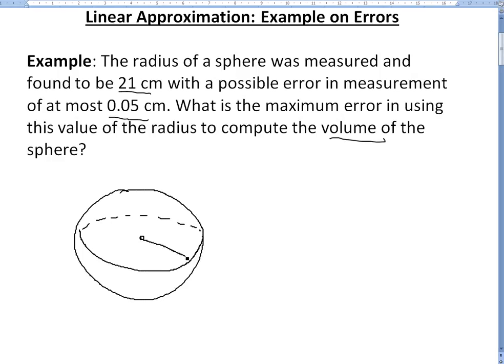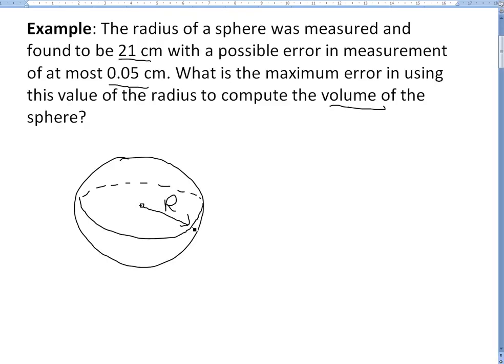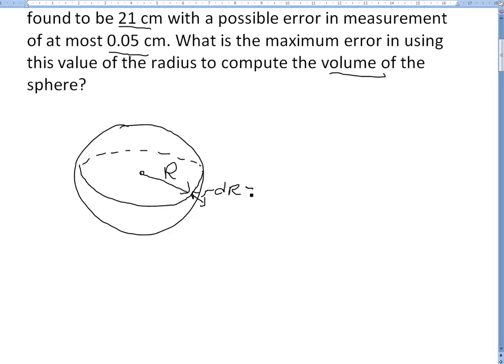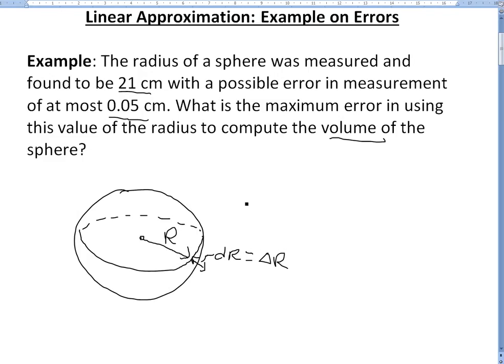So we have the radius here, we'll call this R. Basically we have R here, then we have this error here in the radius. We'll call this dR or change of R, or this also equals delta R. So basically change of R, dR in differentials notation.